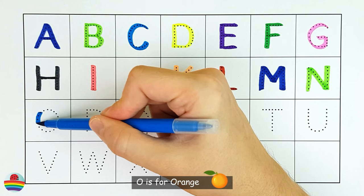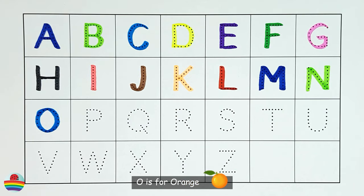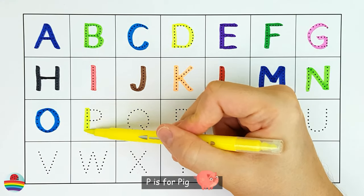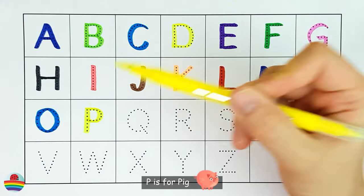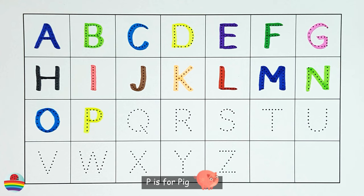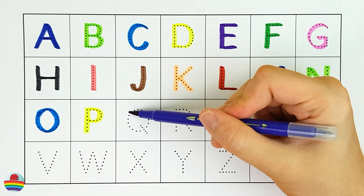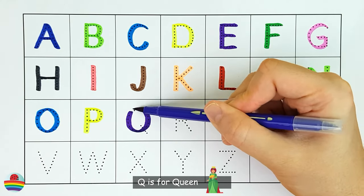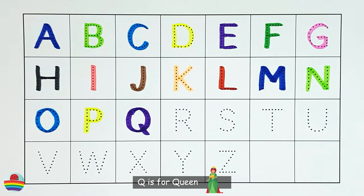O. O is for orange. O. P. P is for pig. P. Q. Q is for queen. Q.